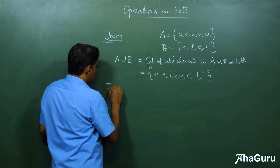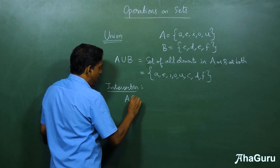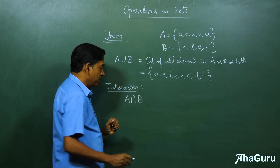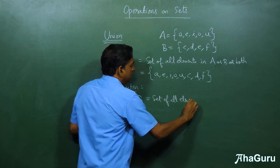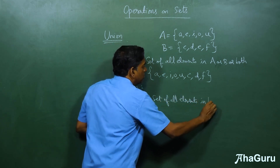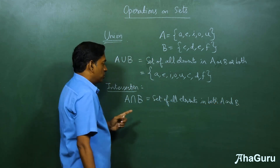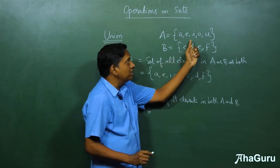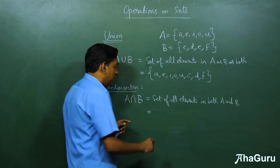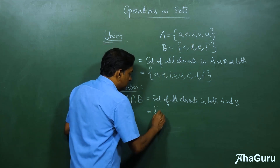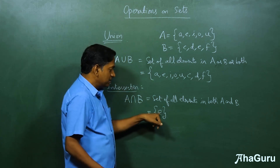The next idea is what is known as the intersection, where we say A intersection B. This is an inverted U and this is the set of all elements in both A and B. Clearly, only small 'e' is an element in both sets, so the intersection will be just the set with one element, small 'e'.